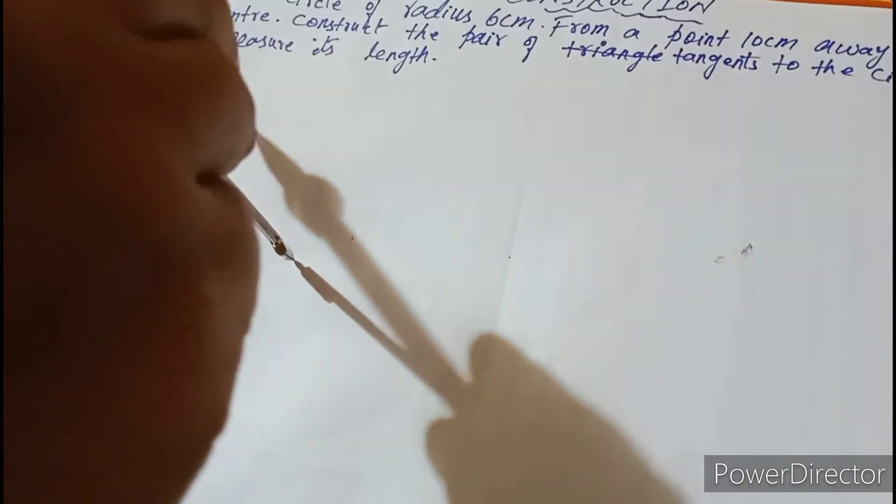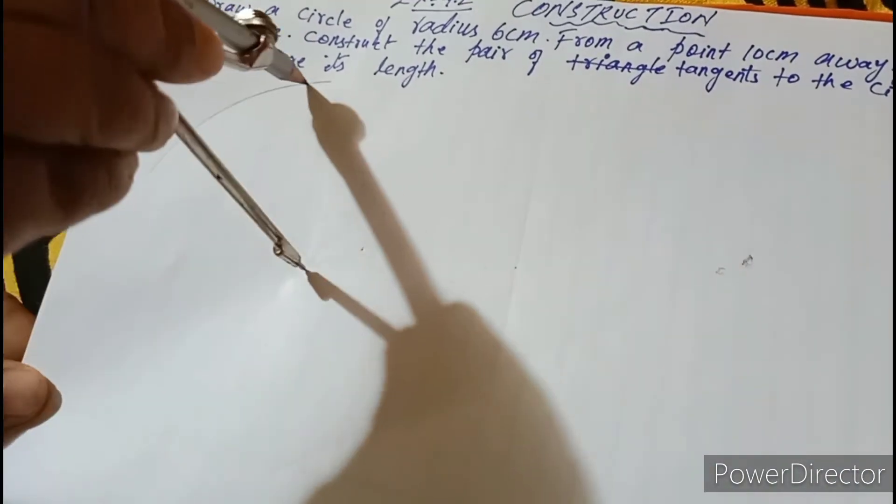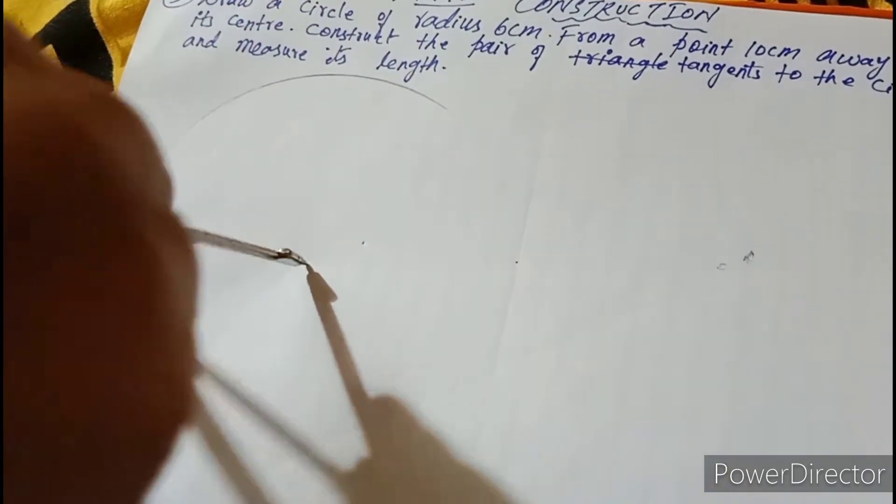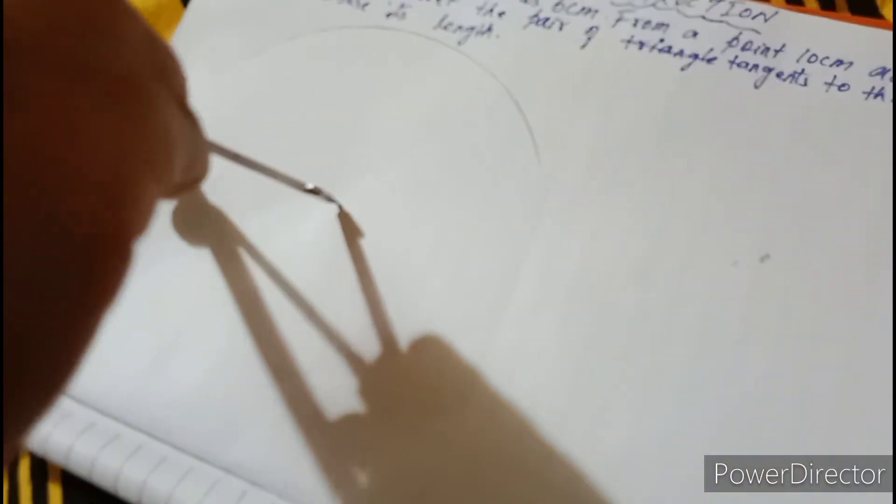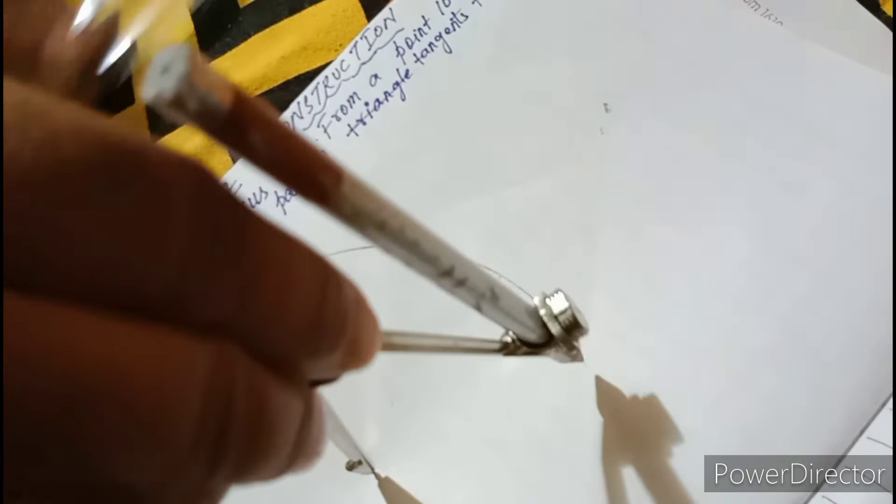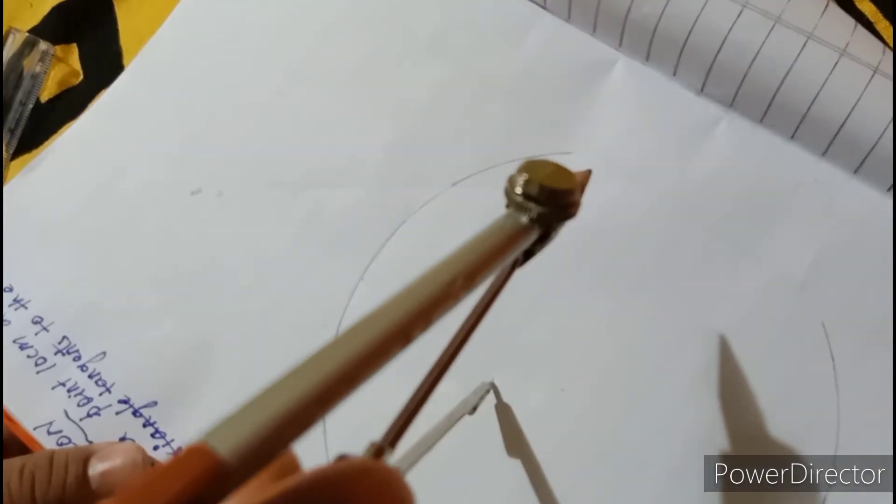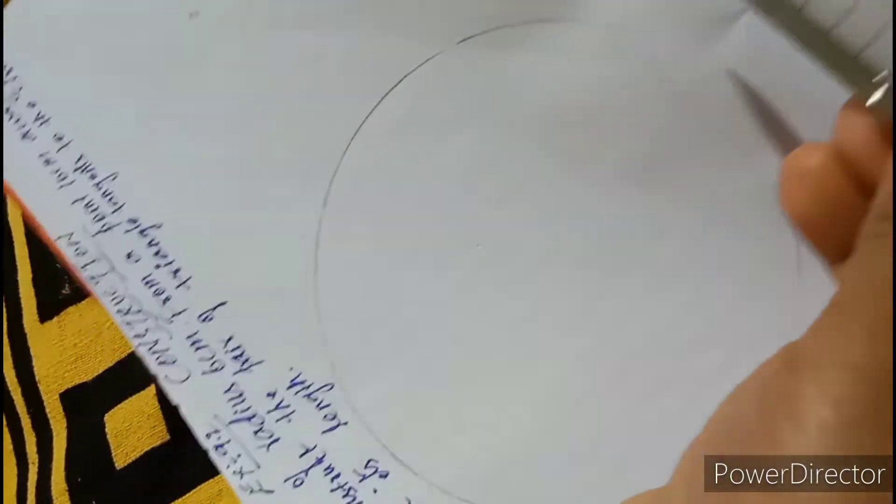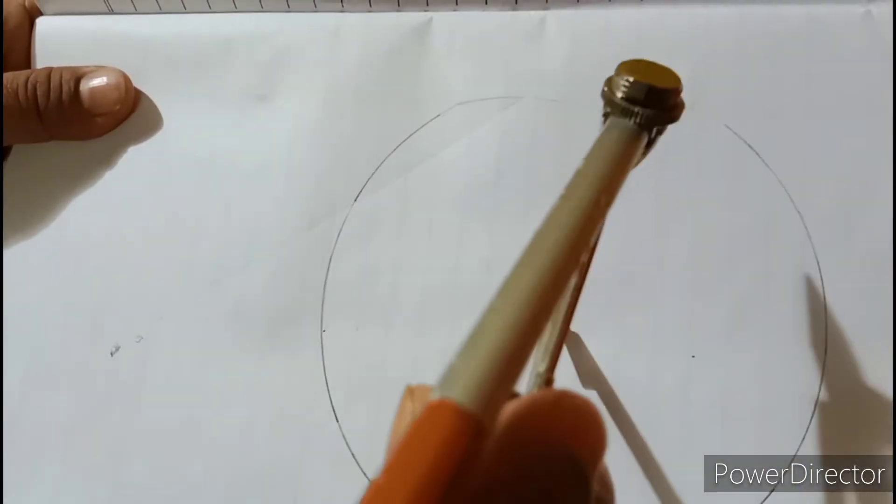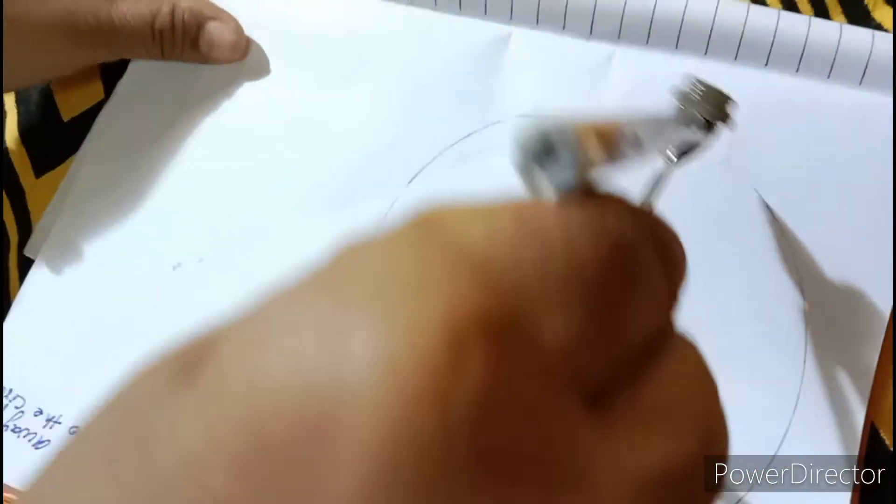From this to this, right? You can see 6 cm. Now draw a circle. I am drawing a circle of 6 cm. Observe. It should not be very thick or very thin. Make sure that pencil should be very sharp. And draw a circle like this. From here, I am drawing one circle.